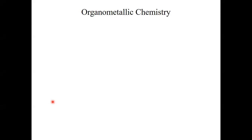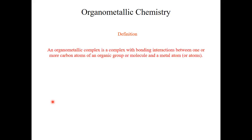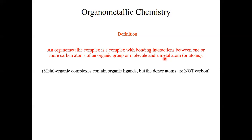At the very beginning, let us think about how organometallic chemistry and organometallic compounds are defined. When we talk about organometallic compounds, we mean complexes with bonding interactions between one or more carbon atoms of an organic group or molecule and the metal atom. There must be some direct interaction between the metal and the carbon atom. This also means that the presence of an organic ligand is not sufficient. We call a complex a metal-organic complex when there's an organic group present, but this organic group does not make a direct interaction between the metal and ligand via a metal-carbon bond.